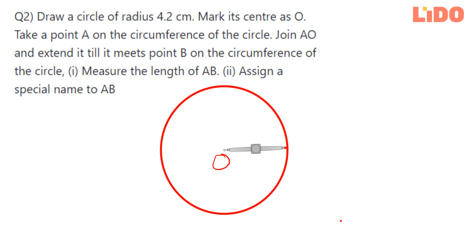O, this point. And then what's next? Take a point on the circumference. Let me give you a minute. I'm going to remove this from here. Yes, I'm keeping it aside. Now what to do next? Take a point A on the circumference of the circle.